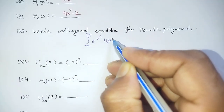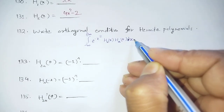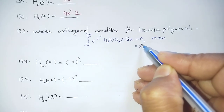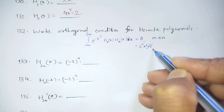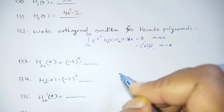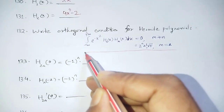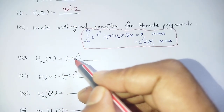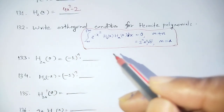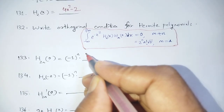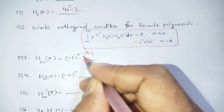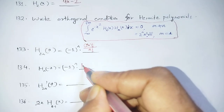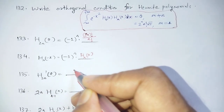The orthogonal condition for Hermite Polynomials: integration of Hn(x)·Hm(x) dx = 0 when m ≠ n, and equals 2^n · n! · √π when m = n. Also, H2n(0) = (-1)^n · (2n)!/n!, and Hn(-x) = (-1)^n · Hn(x). H2n+1(0) = 0.